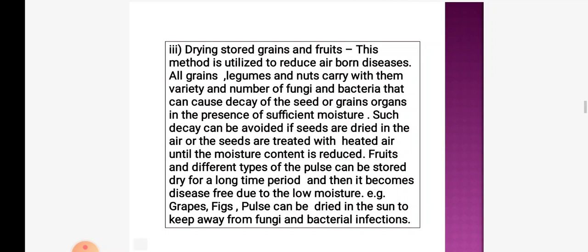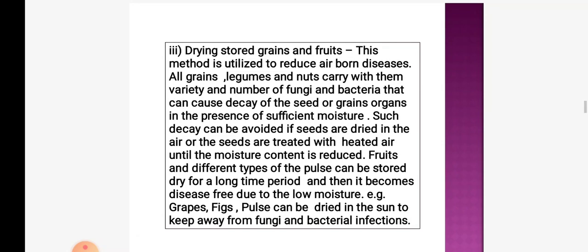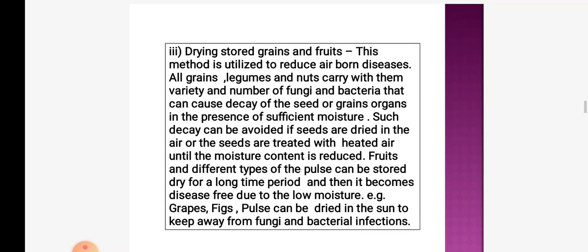Drying stored grains and fruits: this method is utilized to reduce airborne diseases. All grains, legumes, and nuts carry a variety of fungi and bacteria that can cause decay of the seed or grain organs in the presence of moisture. Such decay can be avoided if seeds are dried in air or treated with heated air until moisture content is reduced. Fruits and other plant products can be stored dry for a long time and become disease-free due to low moisture. For example, grapes, figs, and pears can be dried in the sun to keep away from fungal and bacterial infections.